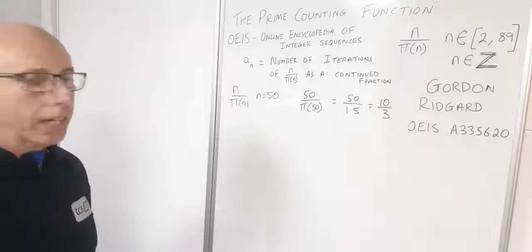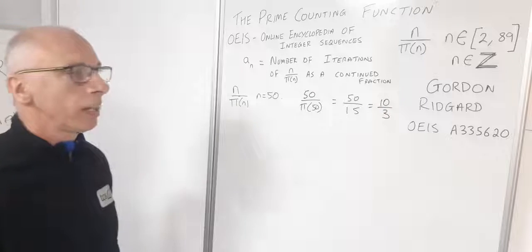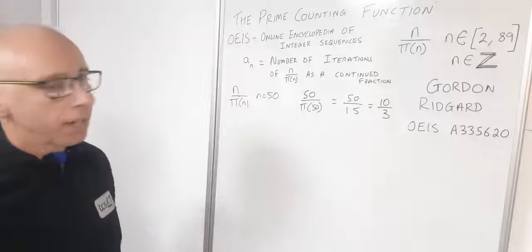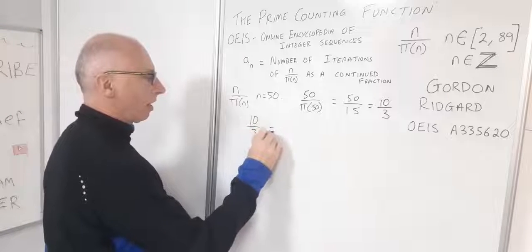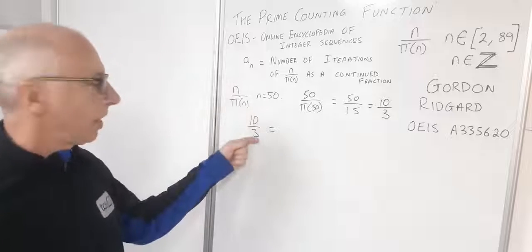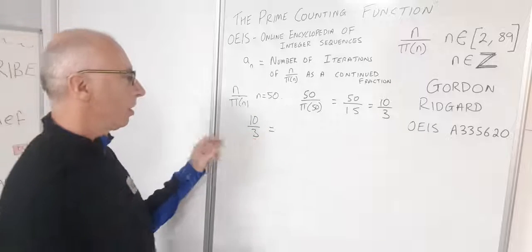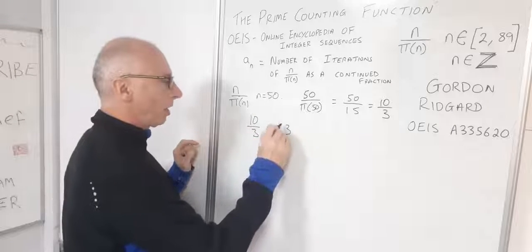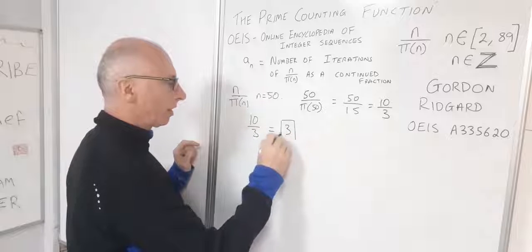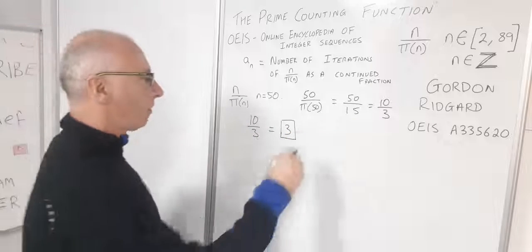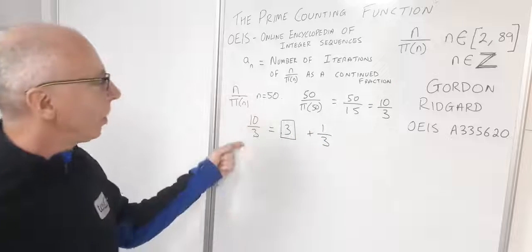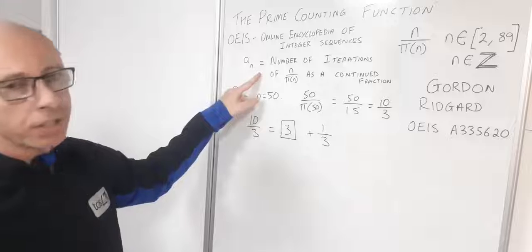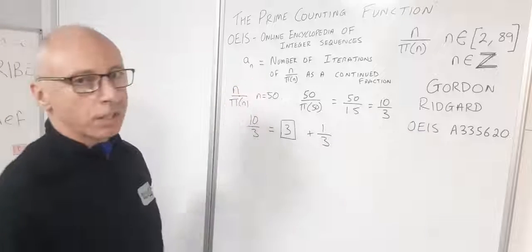Now 10 over 3 as a continued fraction, that's the next thing we're interested in. So 10 over 3, first of all we find the integer part of this solution, so that is going to be 3. I'm just going to box that, and then that leaves us a leftover of one third. So that's our first iteration as far as this sequence is concerned.